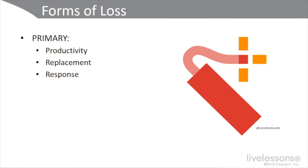Examples include lost revenue from operational downtime or outage, paying workers when they can't do anything due to an outage, breach, or ransomware, replacing tangible assets, cash, having to purchase Bitcoin to pay off a ransom, the people hours spent restoring operations following an incident, time spent in meetings, incident response, and disaster recovery.